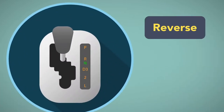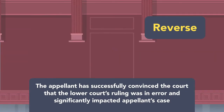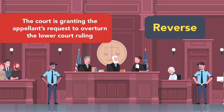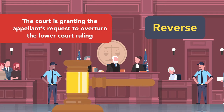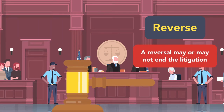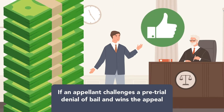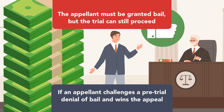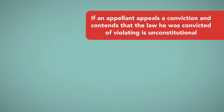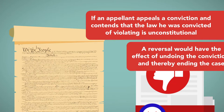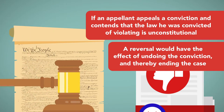Reverse. If the appellant has successfully convinced the court that the lower court's ruling was in error and significantly impacted the appellant's case, the court will reverse the lower court ruling. A reversal means that the court is granting the appellant's request to overturn the lower court ruling. A reversal may or may not end the litigation depending on the nature of the appeal. For example, if an appellant challenges a pre-trial denial of bail and wins, a reversal simply means the appellant must be granted bail but the trial can still proceed. In contrast, if an appellant appeals a conviction and contends that the law he was convicted of violating is unconstitutional, a reversal would undo the conviction and thereby end the case.